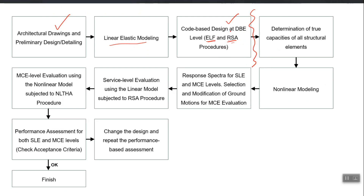In PBD you go beyond that — you convert the final design into the capacities required as input in a non-linear computer model. For example, once you finalize a particular column's steel cross-section, conventional design simply passes it to the draftsman for implementation. But in PBD, using that final design — the size of the column and amount of steel — you convert the design into capacity. For columns, the action-versus-deformation curve input in the non-linear model is the moment versus rotation, m-theta.